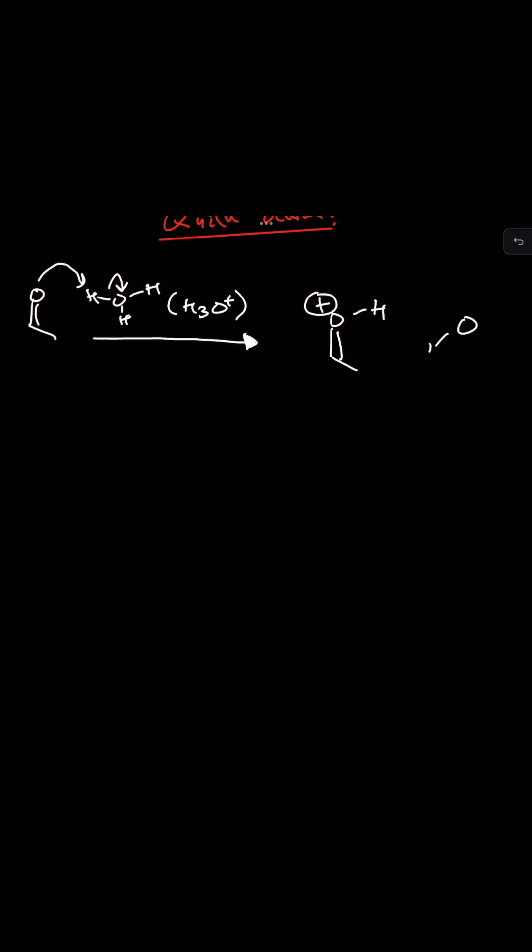also form water as a byproduct and that's important because now we have this alpha hydrogen here and we can abstract the alpha hydrogen which will form a double bond pushing these electrons, the pi electrons, back up and we'll make this.